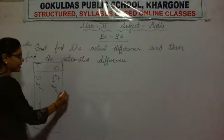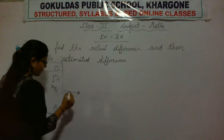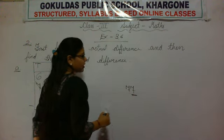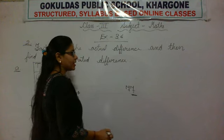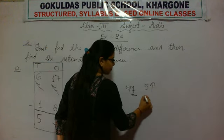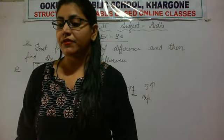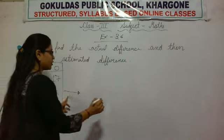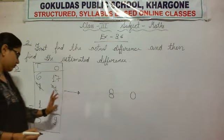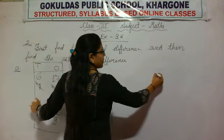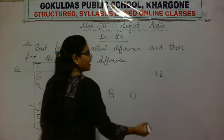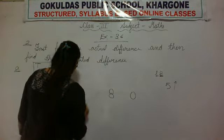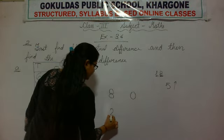Now for calculating estimated difference, first of all we will round off the given numbers. The number 77 has 7 at the ones place, which is greater than 5, so we will round it up to 80. The next number is 18 — it has 8 at the ones place, and 8 is greater than 5, so again we will round it up to 20.